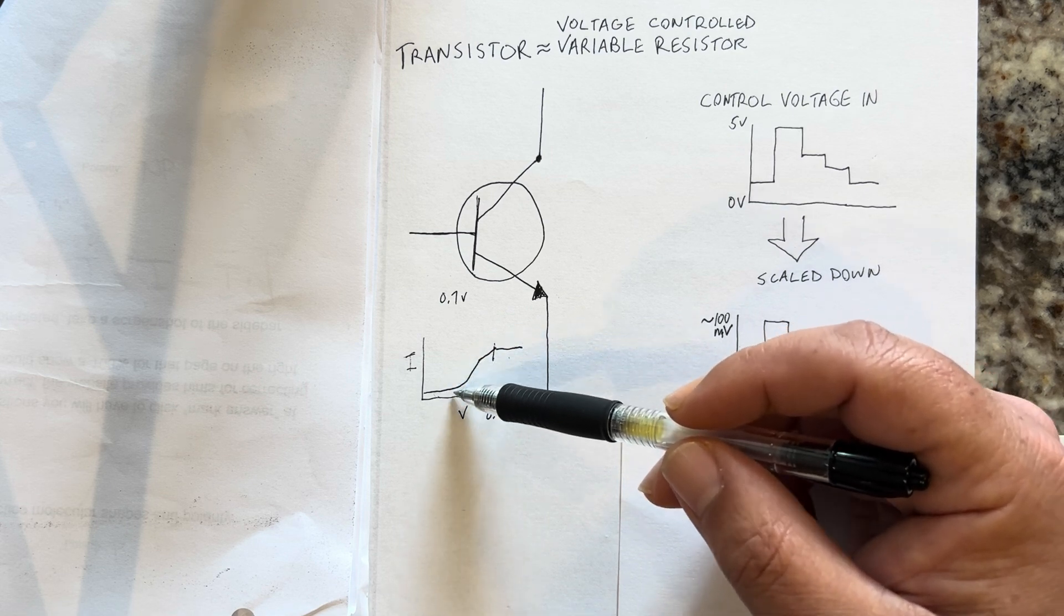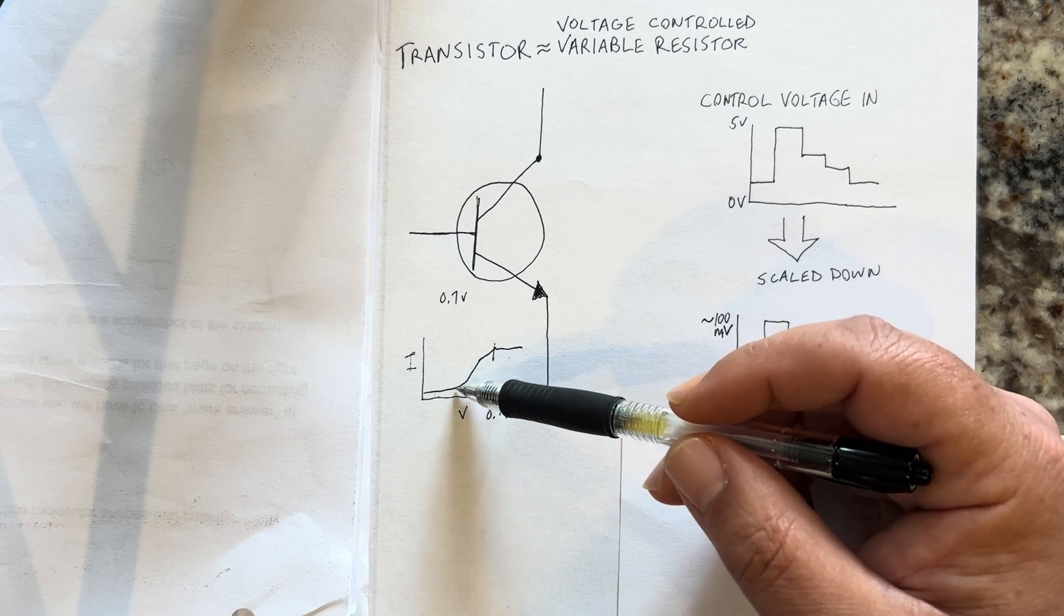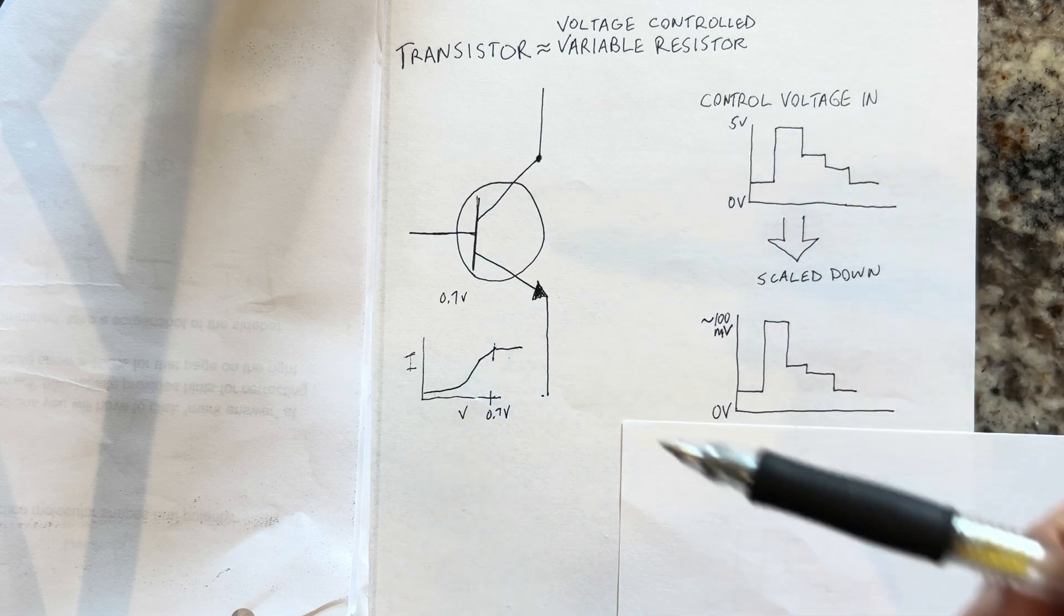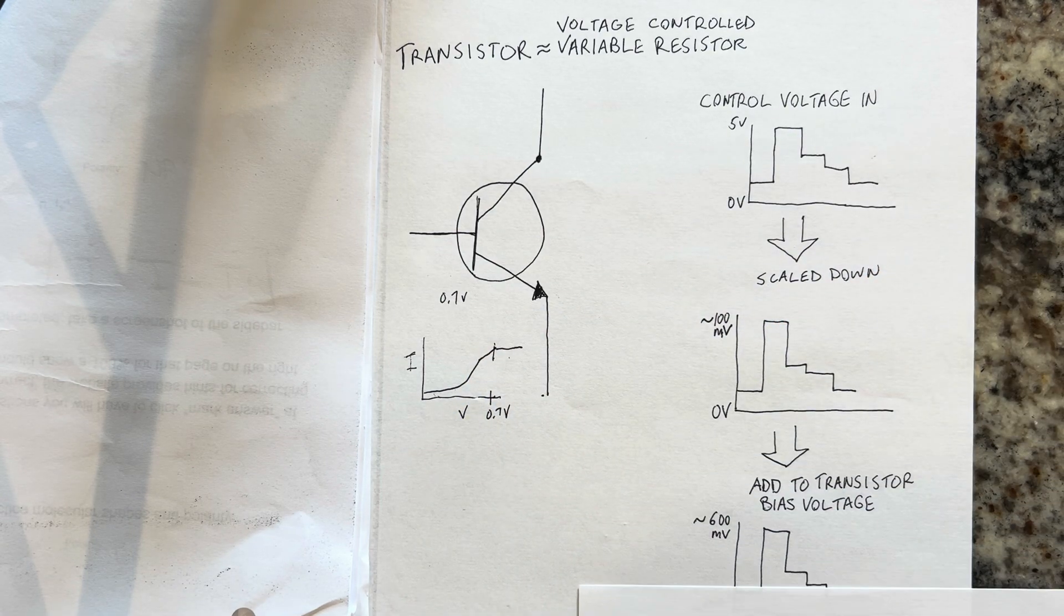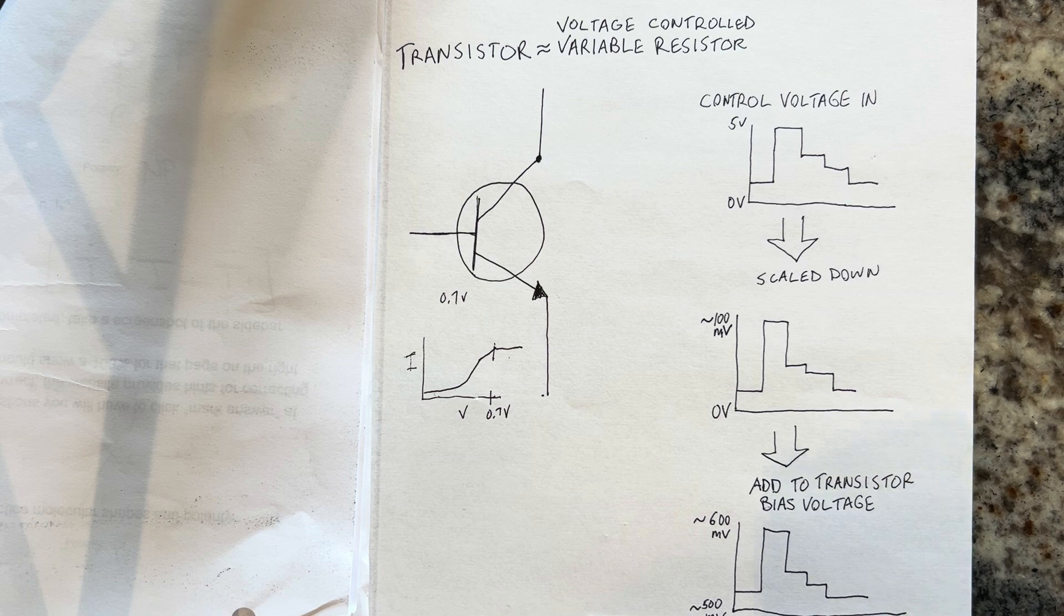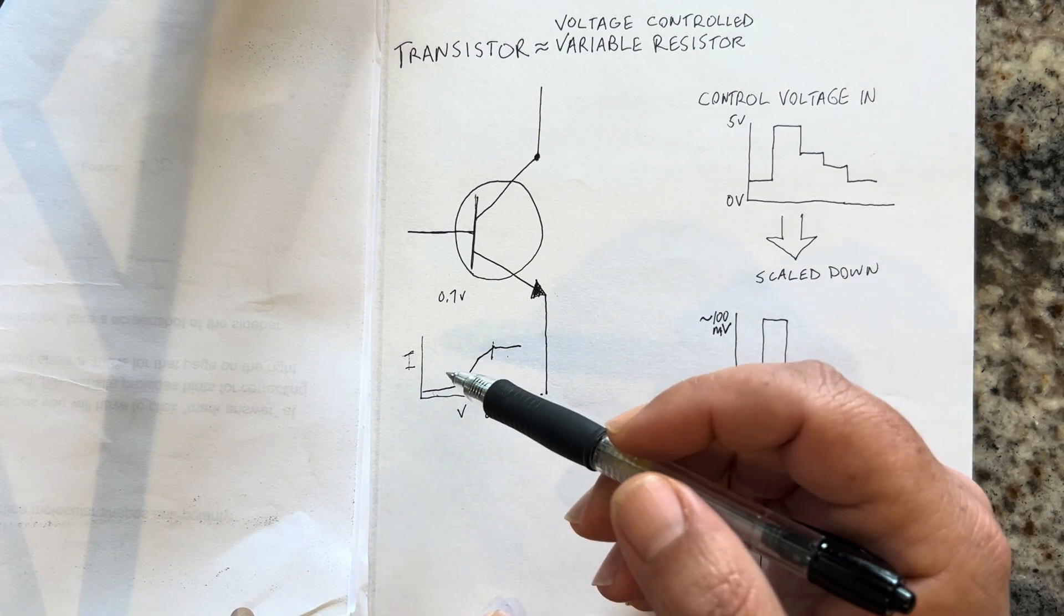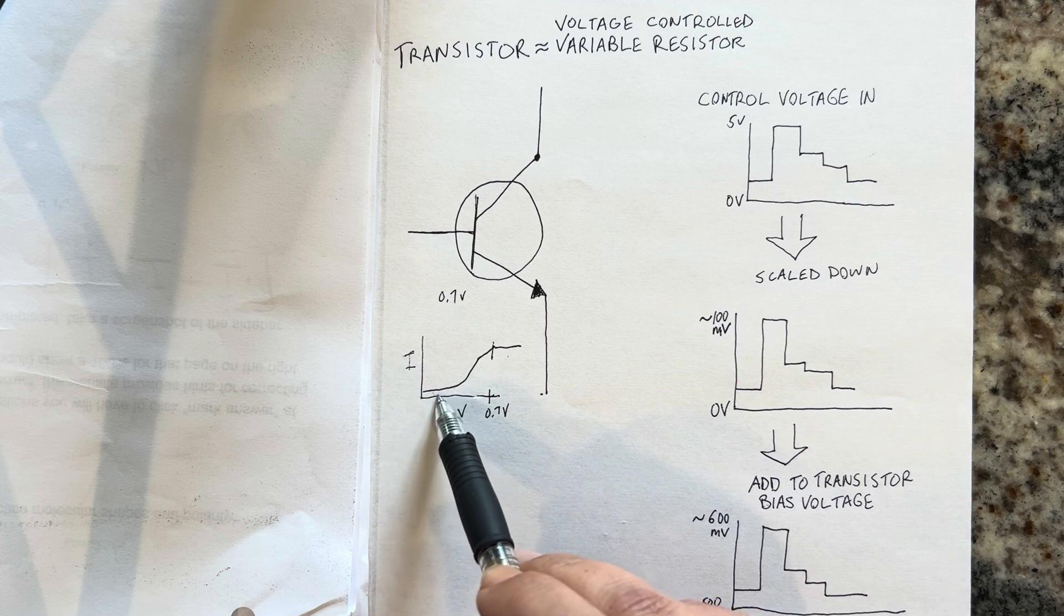We want it to be in the realm of 0 to 100 millivolts because we want to use this sweep. This is going to be like a resistor, and we add it to a transistor bias voltage to keep it in this range somewhere over here.